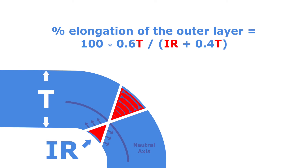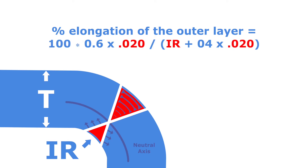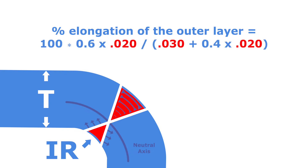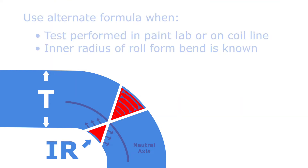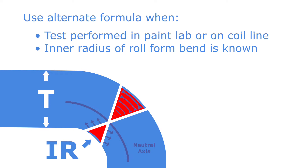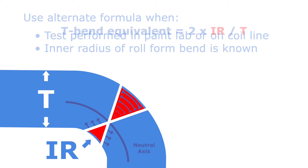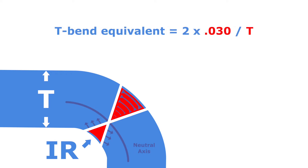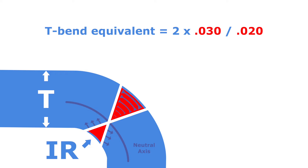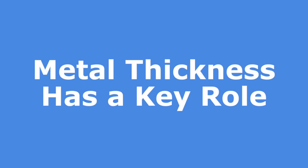It is important to know the amount of stretching that takes place in the outer layer of metal being fabricated, as this stretching is what the paint experiences during fabrication. It is a simple matter to perform this calculation knowing the thickness of the metal T and the inner radius of the bend, IR. For example, assume a painted metal thickness of 0.020 inches and an inner bend radius of 0.030 inches. The percent elongation would be calculated as shown here. Assuming you know the inner radius of the roll formed bend that your customer is performing, use this equation. For example, if the inner radius of the bend is 0.030 inches and the metal thickness is 0.020 inches, the T-bend equivalent value would be the following.